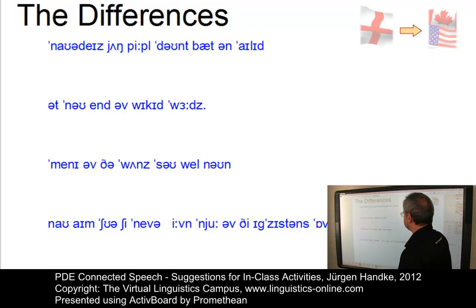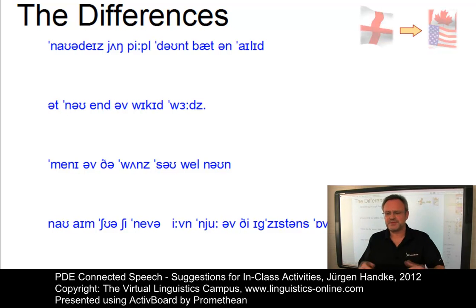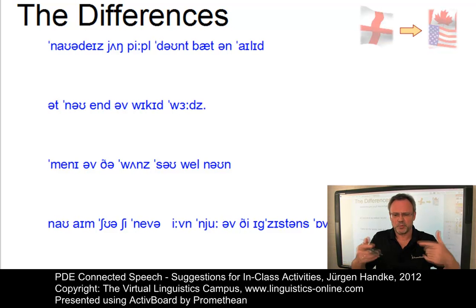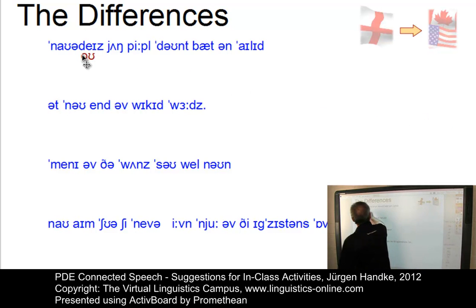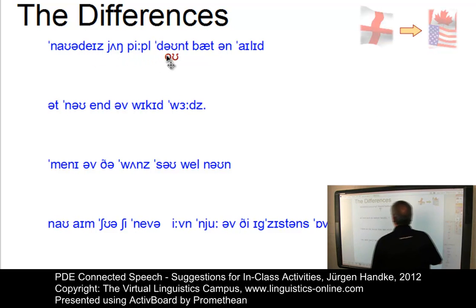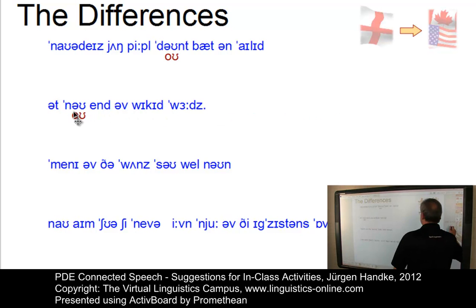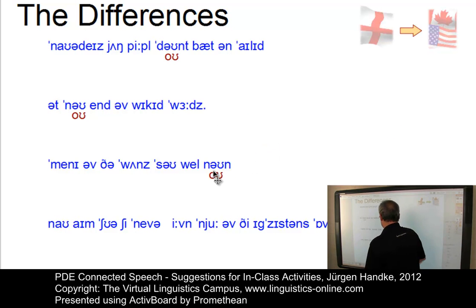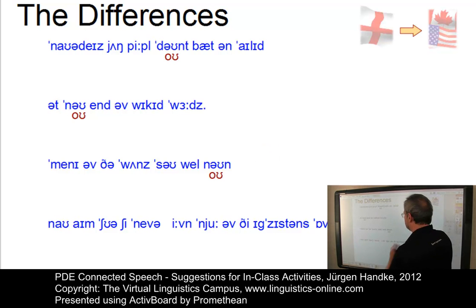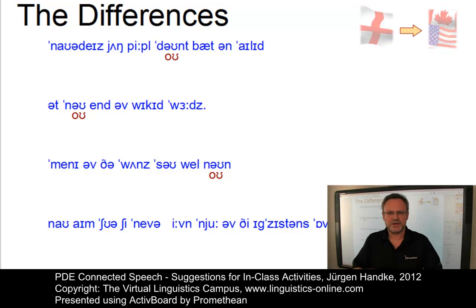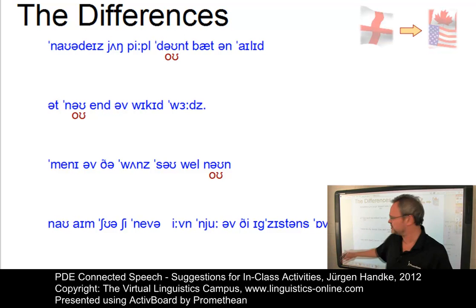Let us now select a few lines from the solution and outline the main differences between received pronunciation — the RP solution — and North American English. We should start with the pure symbolic differences first. The first question should be: where do we use a different symbol in North American English? That's the basic symbolic difference where in American English the LPD notation uses a different symbol.